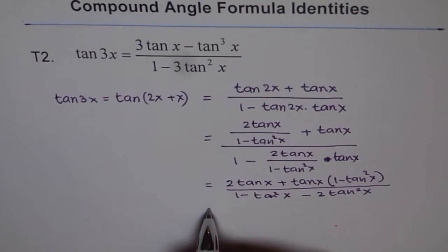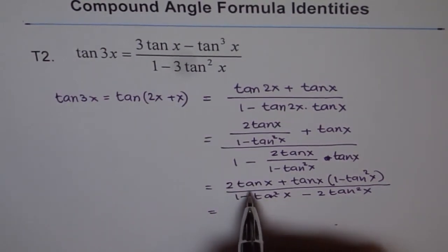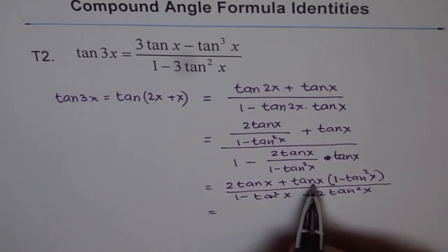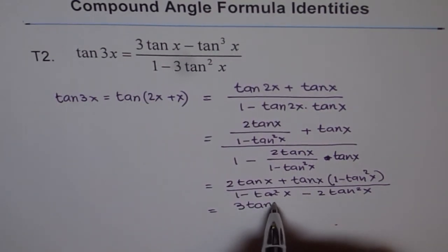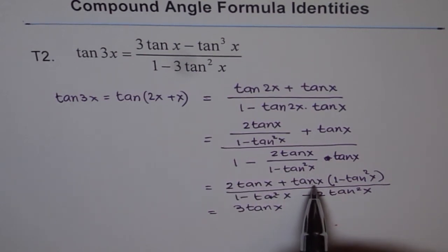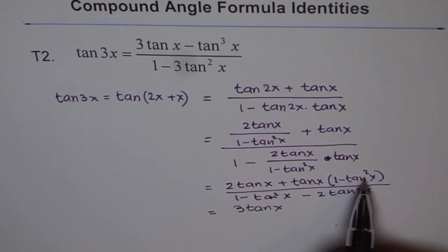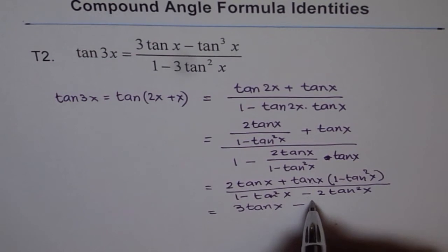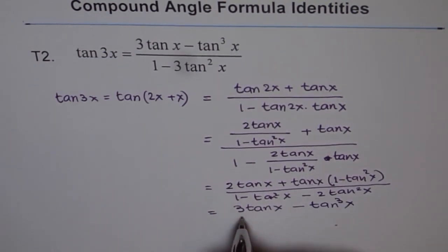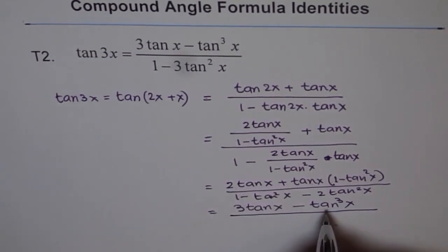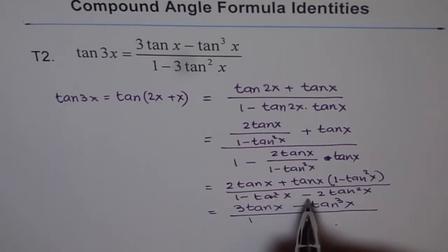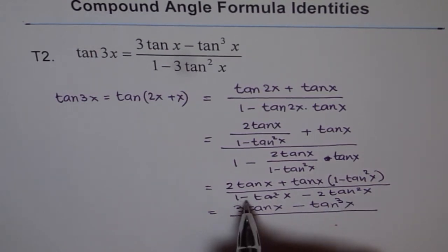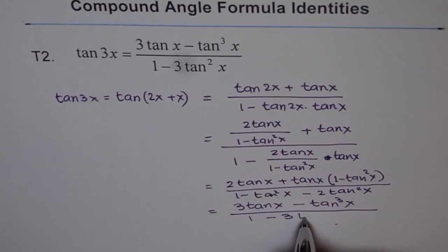This is equal to 2 tan x plus tan x will give 3 tan x. When I multiply tan x by minus tan squared x, I get minus tan cubed x. That's the numerator, divided by 1 minus tan squared x minus 2 tan squared x, which makes minus 3 tan squared x.